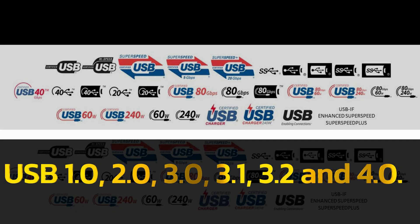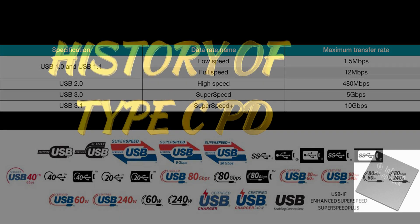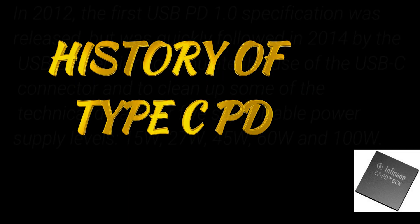The latest one is USB 4. Here is a table for USB specifications — data rate name and maximum transfer rate. USB 1 and 1.1: low speed and full speed, 1.5 Mbps and maximum 12 Mbps. USB 2: high speed, 480 Mbps. USB 3: super speed, 5 Gbps. USB 3.1: super speed plus, 10 Gbps.